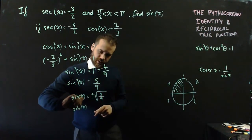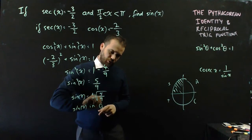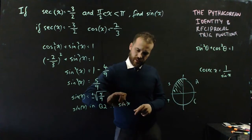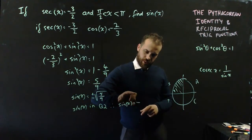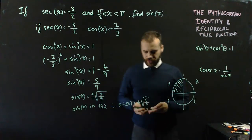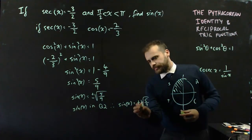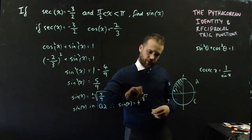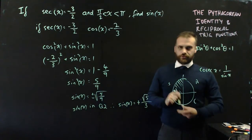Sine x in quadrant 2, therefore sine x equals positive root 5 on 9. I should probably change that 9. Positive root 5 on 3.